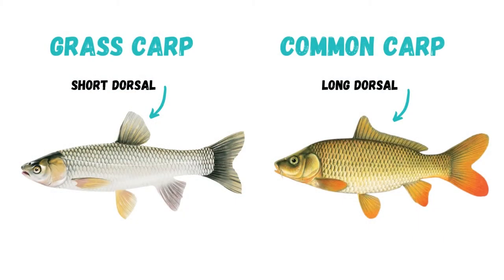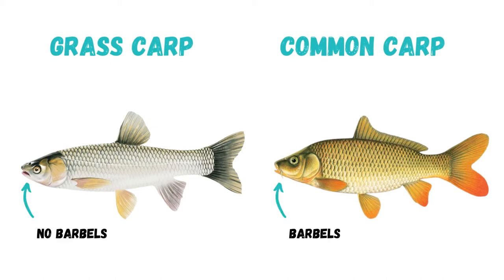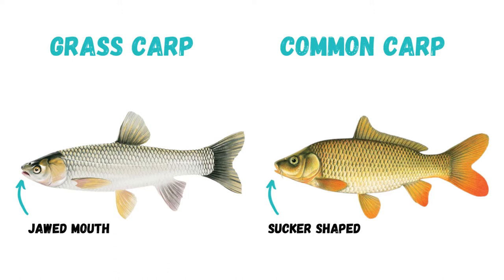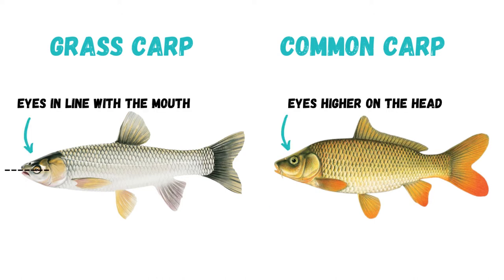Grass carp possess a short narrow dorsal fin compared to the much longer dorsal fin of the common carp. Grass carp possess no whiskers or barbels at the corners of their mouth. Common carp have a sucker-shaped mouth compared to the much stronger jawline of the grass carp.